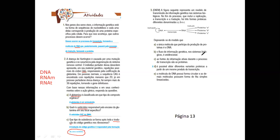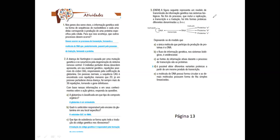No exercício 3, ele te dá um desenho, um modelo. O que esse modelo tá falando? Que o DNA pode fazer o DNA — aí o processo é a replicação; o DNA faz o RNA — aí é a transcrição; e o RNA vai fazer a proteína. Esse RNA, dependendo da sequência dele, pode fazer várias proteínas diferentes. Por isso que a gente pode fazer quase um número infinito de proteínas no nosso corpo. A resposta é D, porque a partir desse esquema a gente percebe que é possível ter variantes proteicas.